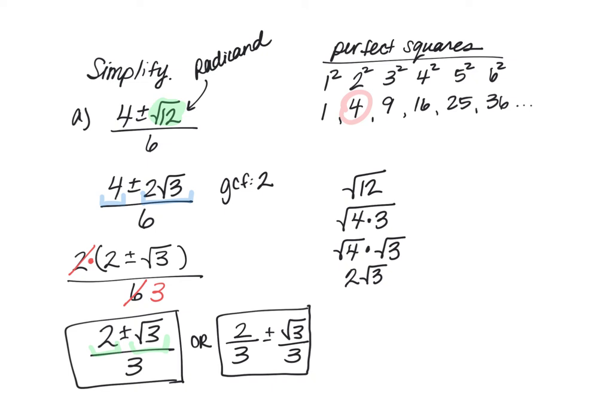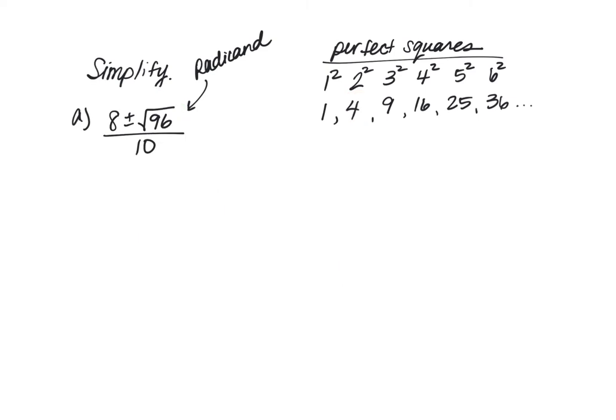Let's do another one with a larger radicand, a larger number inside the square root. 8 plus or minus the square root of 96, all divided by 10. So this time, 96 is our radicand. It's a larger number. And again, we could do a factor tree, but we're trying to avoid that and see if we can come up with a more efficient method of simplifying. So I am going to take a look at those perfect squares, and I'm looking for the largest perfect square that would divide evenly into 96. And this time, I believe it's going to be 16.